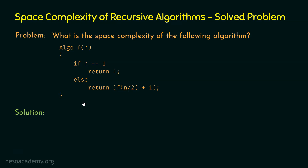In order to find the depth of recursion, we need to know the flow of function calls of this algorithm. We can observe that the function f is calling itself, so clearly this is a recursive algorithm. The space complexity of this algorithm is the same as the depth of recursion, but we need to represent the depth of recursion in asymptotic notation, which we will do at the end.